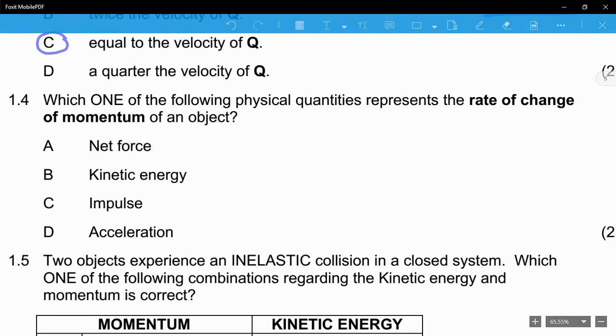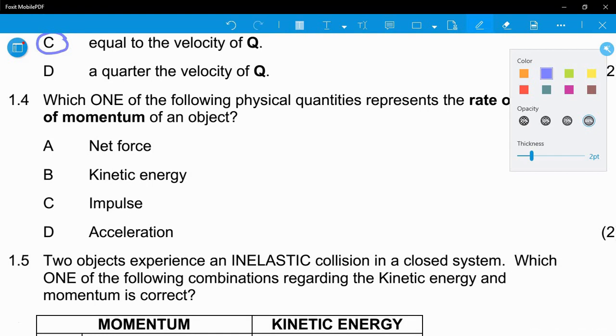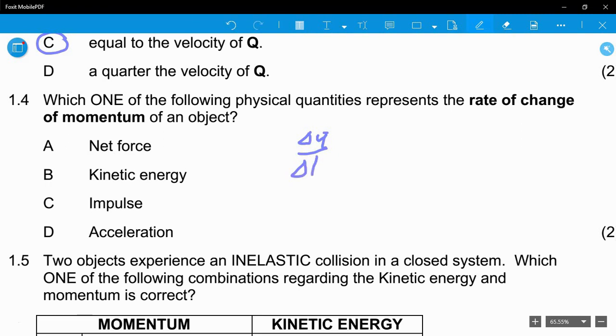Question 1.4: Which one of the following physical quantities represents the rate of change of momentum of an object? Rate of change means change in momentum P over change in time T. That's what it means by rate of change. If you look in your formula sheet, you'll see it's equal to F net. So it's net force. The answer is quite straightforward - it's the net force.